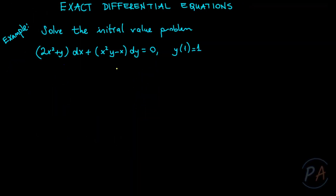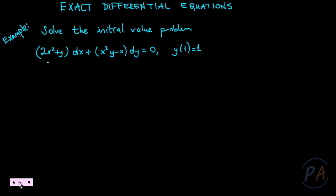Everyone, today we are solving an initial value problem given as (2x² + y)dx + (x²y - x)dy = 0 with the initial condition y(1) = 1. First, let me check if the given differential equation is exact or not.